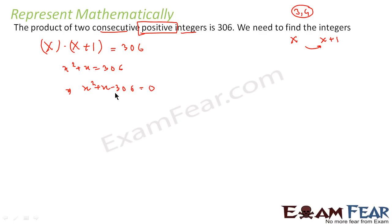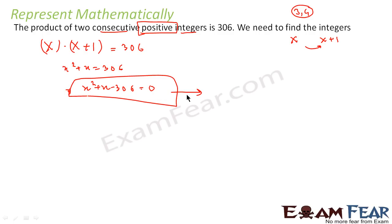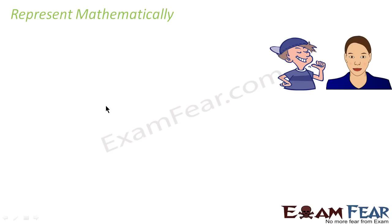This is the product of two consecutive positive integers. This is the equation where x is the first positive integer. To represent this scenario mathematically, we write x squared plus x minus 306 equals 0, where x is the first positive integer. We can solve this — we will learn how very soon.